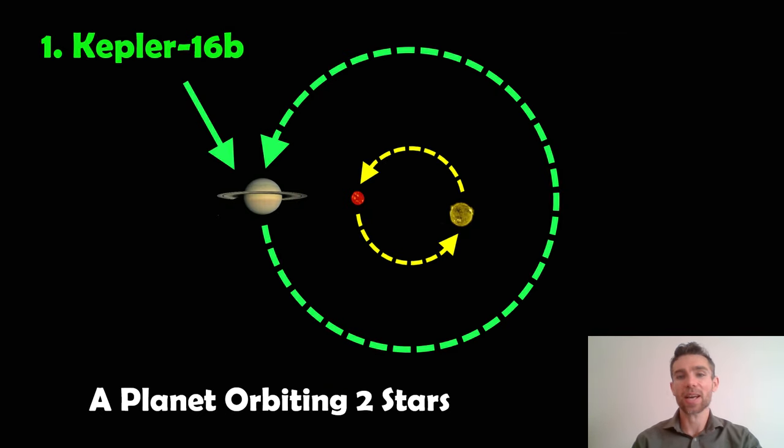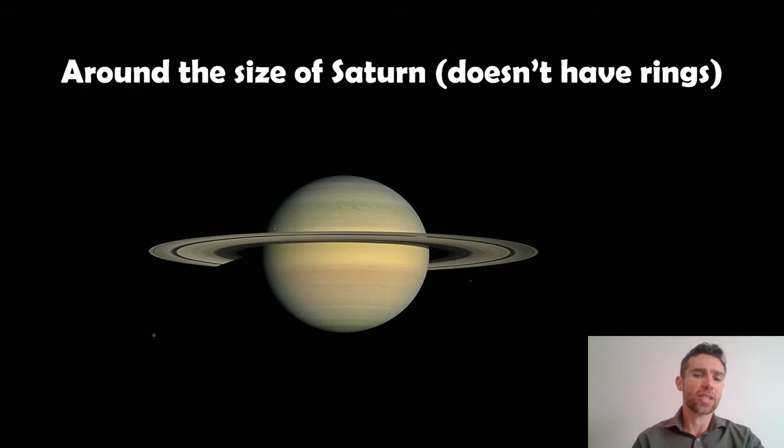So my top one, this is my absolute favorite exoplanet for various different reasons. This is Kepler-16b. Now this orbits around the outside of two stars. It's a circumbinary exoplanet and it's about the size of Saturn. The sizes of the planet and the stars are not exact. They're just here to represent what they're like. So it's around the size of Saturn. It doesn't have rings. We know it doesn't have rings. We haven't actually seen it, but there are ways we can detect rings. But this is, at least size-wise, about the size of Saturn. So it's a gas giant.